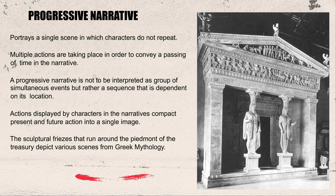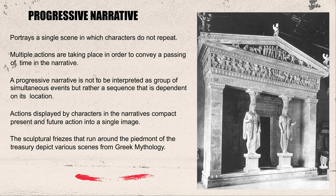Progressive narrative is seen often in Roman and Greek architecture and art. Multiple actions take place in order to convey a passing of time — usually a sequence dependent on its location. In a frieze on architecture, you might start in the top left and read left to right, then go around the corner. It's almost like a timeline stretched out along a frieze. It looks like one single image but is location dependent — a stretched-out timeline.